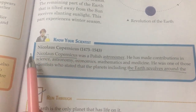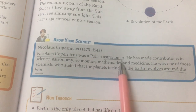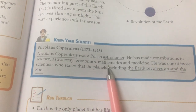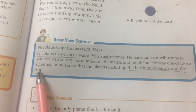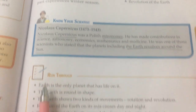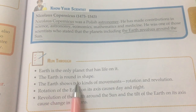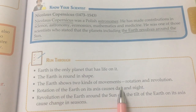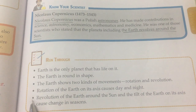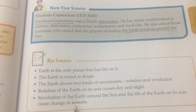Know your scientist: Nicholas Copernicus was a Polish astronomer who made contributions in science, astronomy, economics, mathematics, and medicine. He was one of those scientists who stated that the planets, including the earth, revolve around the sun. Run-through: The earth is the only planet that has life on it. The earth is round. The earth shows two kinds of movements — rotation and revolution. Rotation causes day and night; revolution and the tilt of the earth's axis cause change in season.